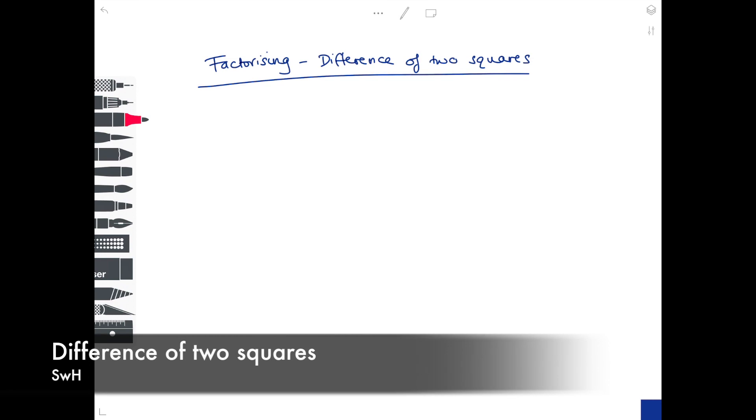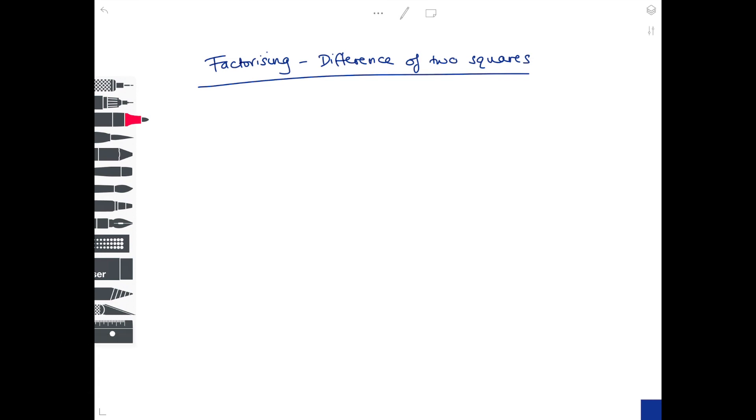In today's video we're going to be looking at factorizing, but a very specific kind which is the difference of two squares. This is when you meet a quadratic expression with no middle term. To show you what I'm talking about, it would look something like this as opposed to something like this. So notice the difference - we have no middle term with this first example.